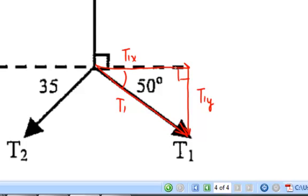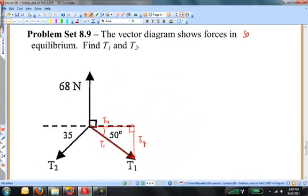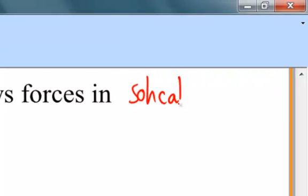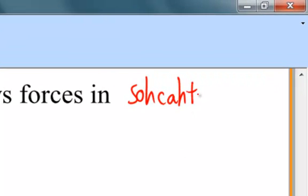Let me remind you about your trig relationships, sine, cosine, and tangent. And perhaps you'll remember this mnemonic, SOHCAHTOA, where the sine is equal to the opposite side of the triangle divided by the hypotenuse. The cosine is the adjacent side divided by the hypotenuse. Tangent is the opposite divided by the adjacent.